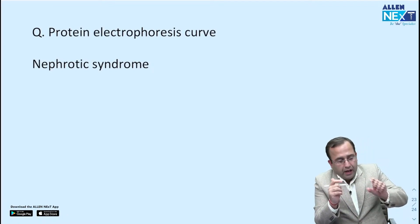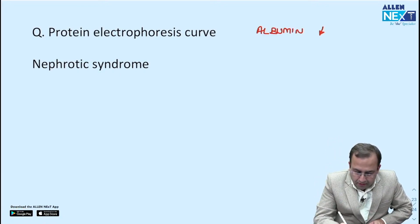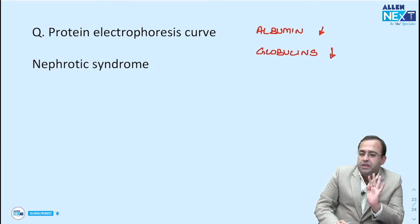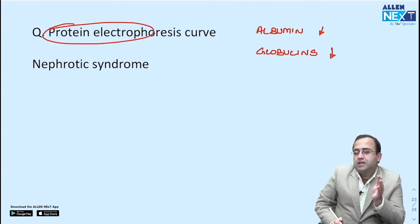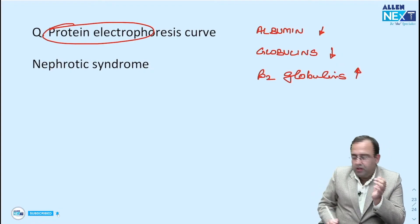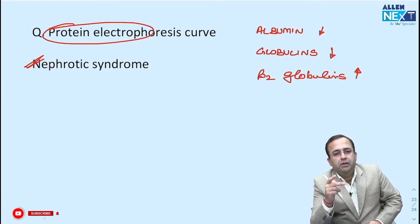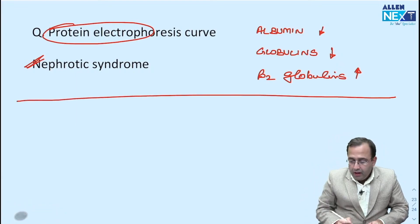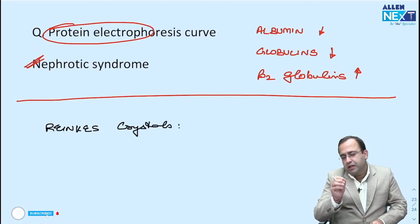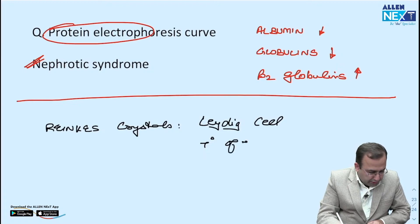Next is protein electrophoresis — it was a written MCQ. What I was told: albumin was reduced along with reduced globulins, and beta-2 globulins were increased. This question was recalled as nephrotic syndrome. In nephrotic syndrome it is associated with hypoalbuminemia, hypo-gamma globulinemia, with increased beta-2 globulins. Another question asked was with respect to Reinke's crystals — it is seen in Leydig cell tumor of the testis.